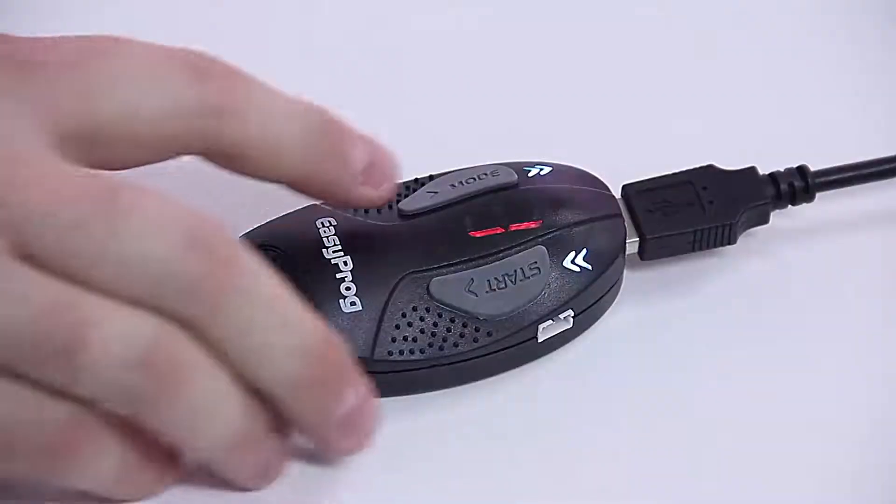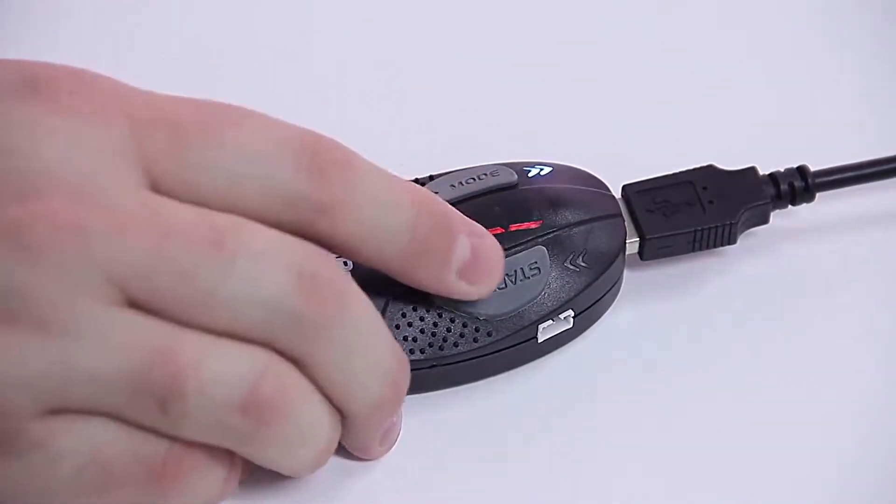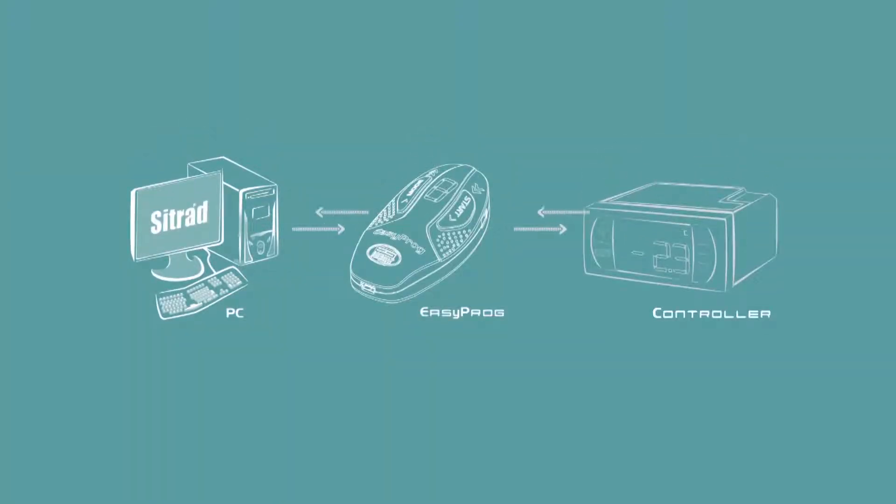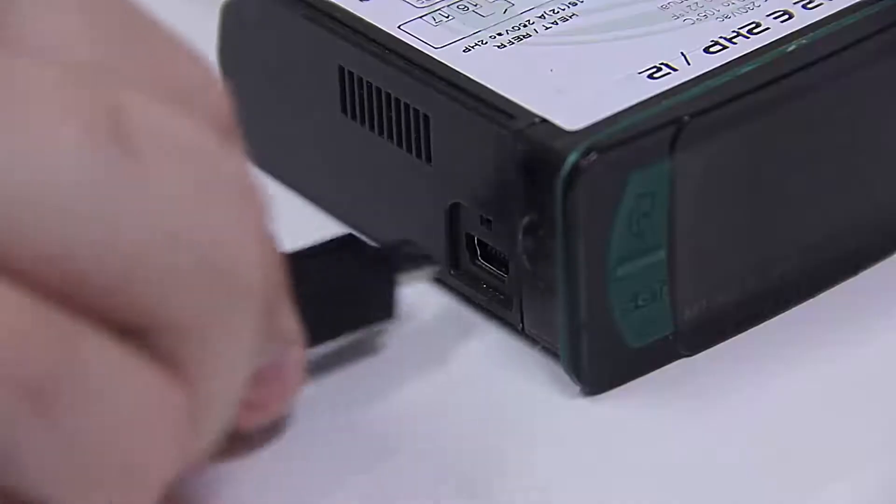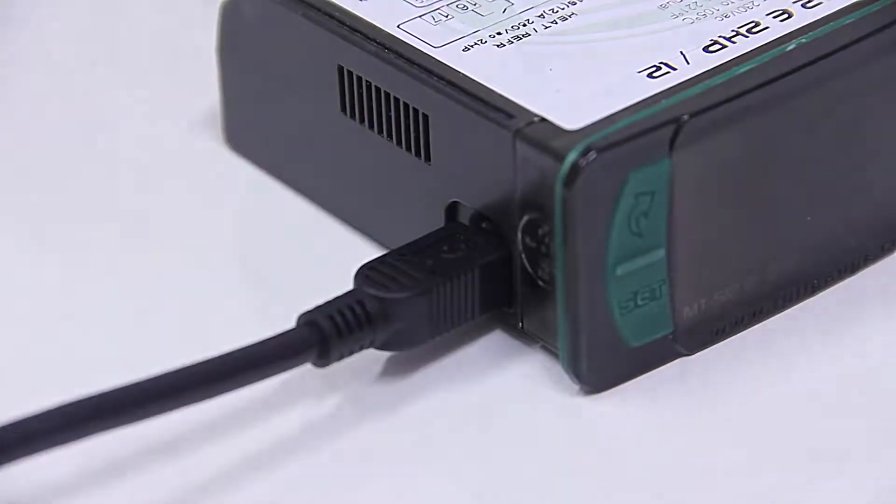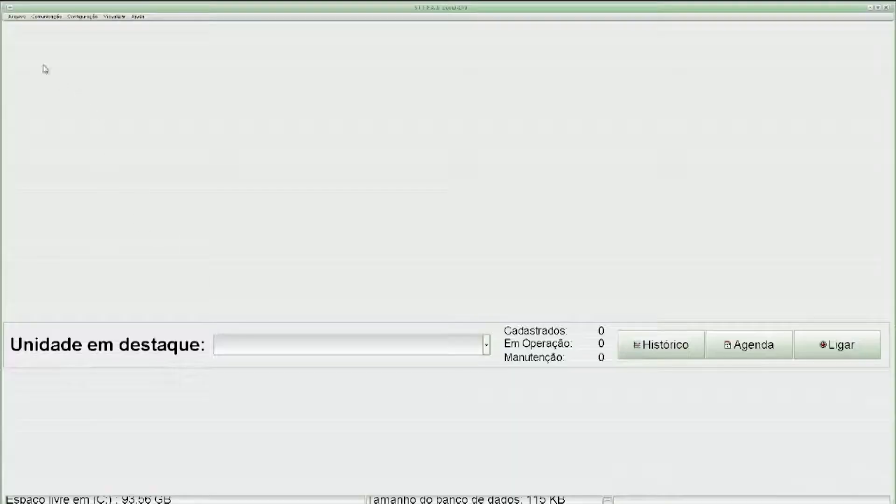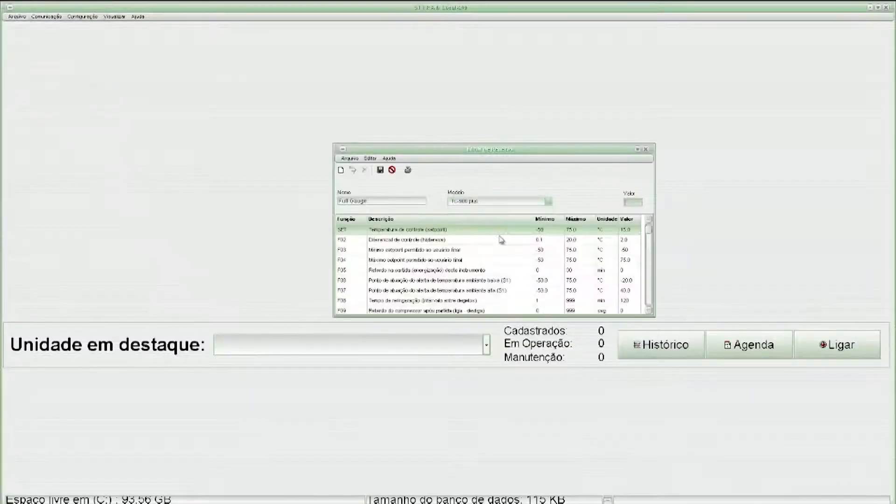To facilitate the programming of the E-Line instruments, Full Gauge Controls provides the EasyProg programmer key. This accessory's main function is to store the parameters of the controllers, load them and download them quickly and easily. Via USB, you can connect the EasyProg to your computer and with the Citrad Recipe Editor, copy, edit and save parameters.